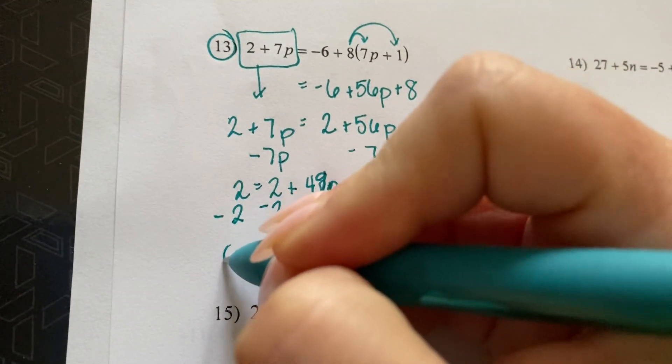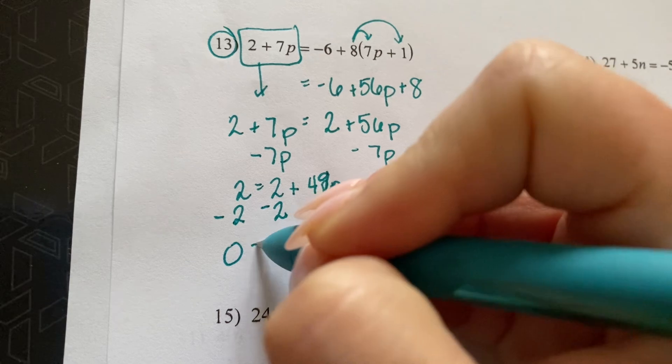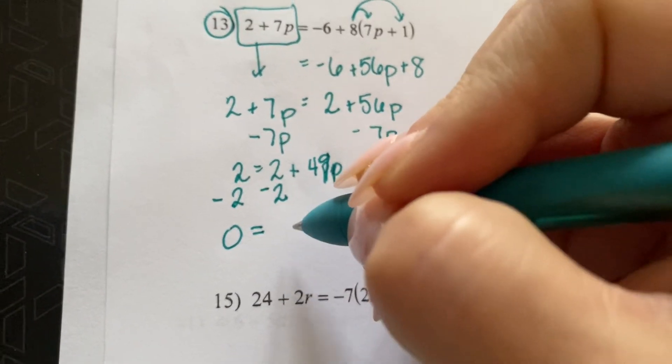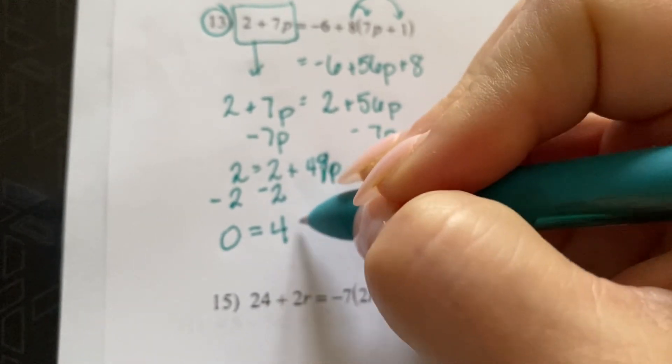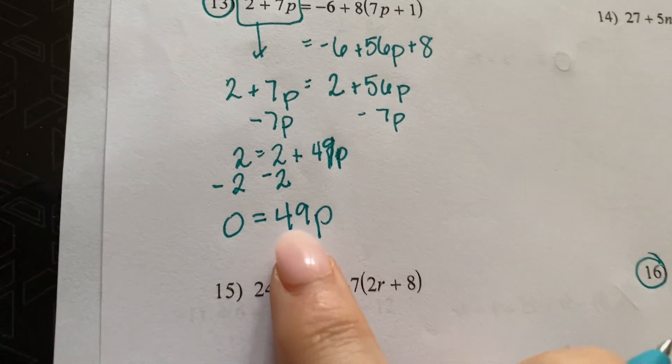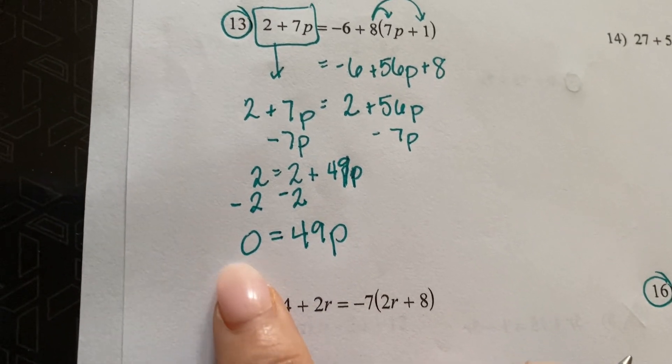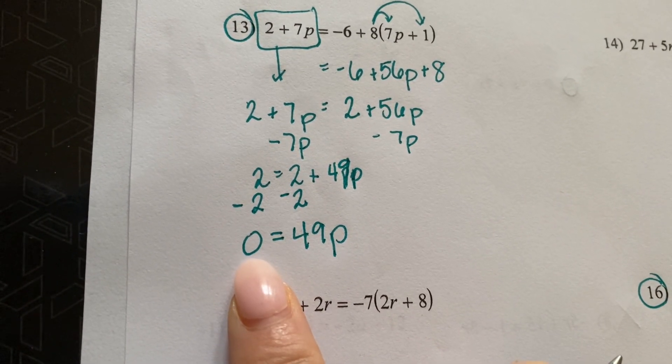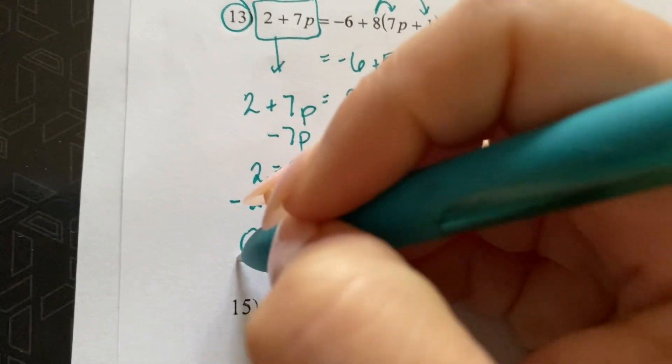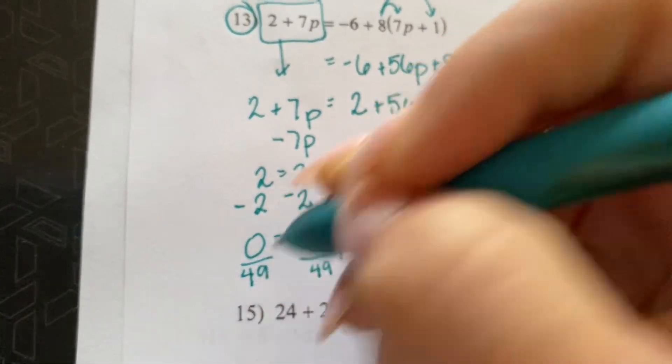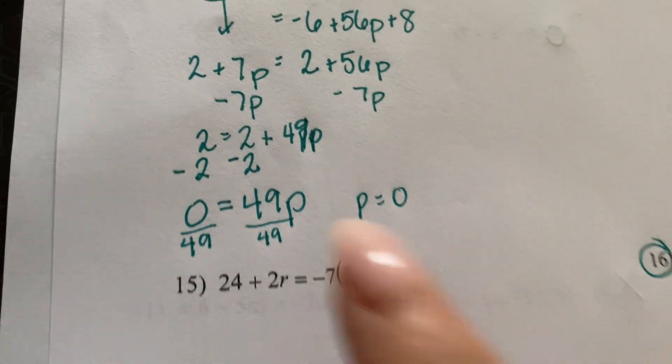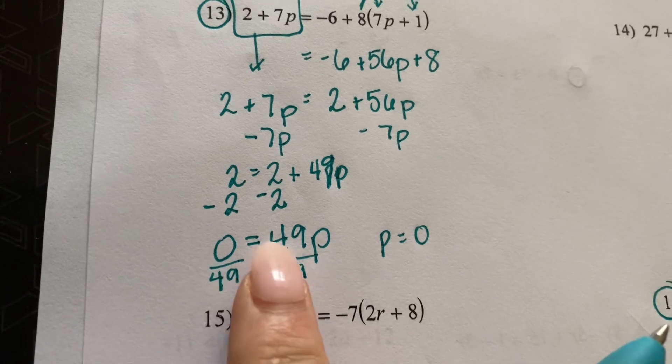I'm going to get 0 over here. This is 0 as well, but I'm not going to write it. 49P. What times 49 gives you 0? Let's divide by 49. P equals 0. So that's it for this one. The P equals 0.